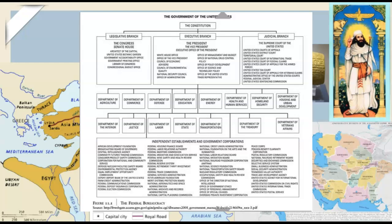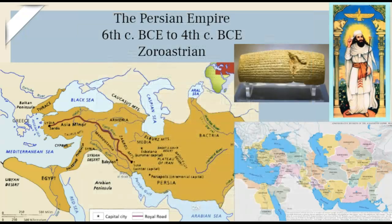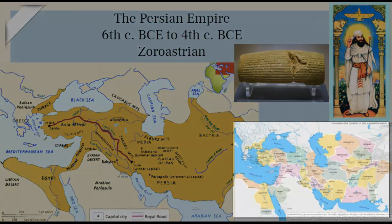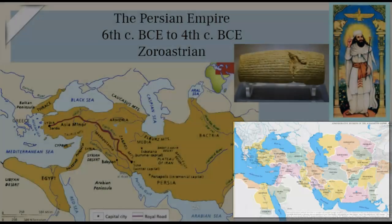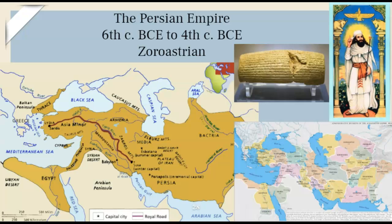Most modern governments today have enormous bureaucracies. Another way that the Persians handled the size of their empire was to break it up into 23 provinces called satrapies, which you can see on the smaller map in the bottom right. Each satrapy was run by a satrap who was like a governor, and this satrap answered to the emperor. As the Persians conquered, they frequently used local leaders to administer the satrapies so they felt less like an occupying power. But to make sure that the satrap was loyal, there was also a group of imperial spies spread throughout the empire.